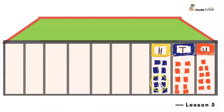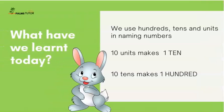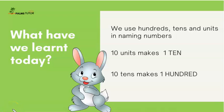You can finish up your painting and keep it, because tomorrow we are going to meet the thousands. So let's review what we learned today: we use hundreds, tens, and units in naming numbers; 10 units make 1 ten; and 10 tens make 100. You are doing a very good job! I'd love to see pictures of what you've painted — send them to me by email. See you next time, bye bye!